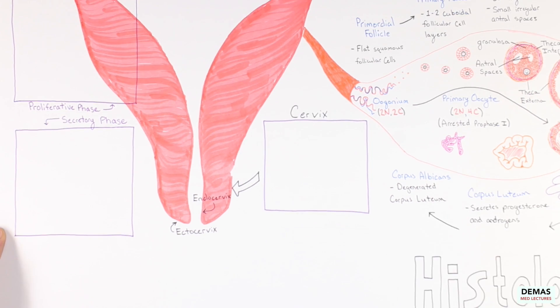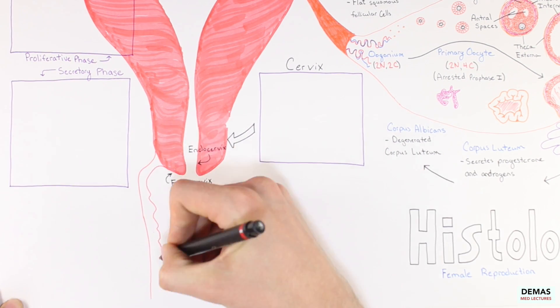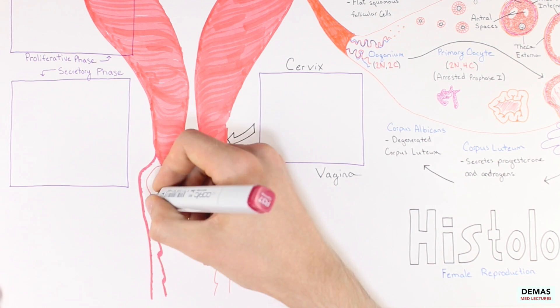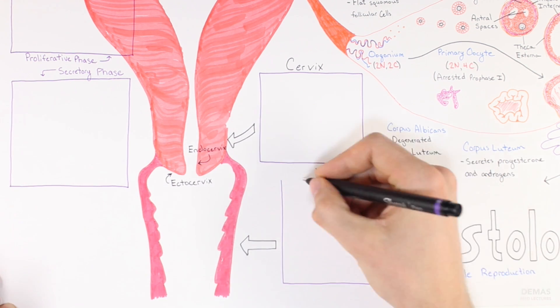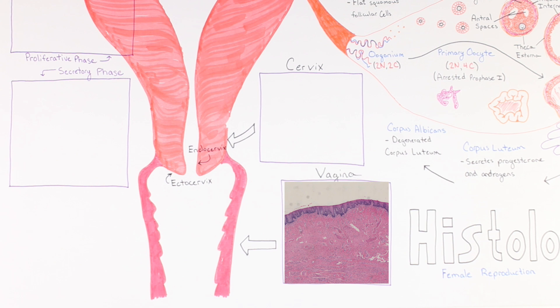Finally, the vagina is covered by stratified squamous epithelium that is similar to the ectocervix. It also displays a prominent smooth muscle layer. At the distal end of the vagina the mucosa gradually transitions into the epidermis of the skin that covers the external genitalia.